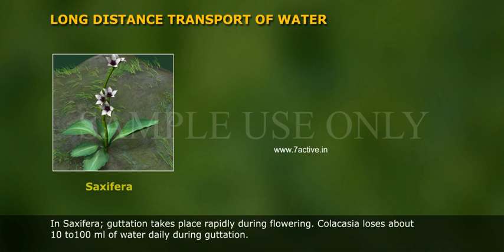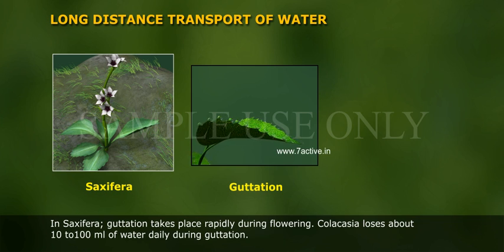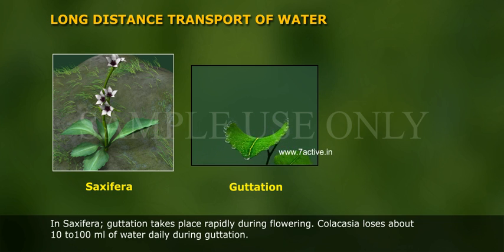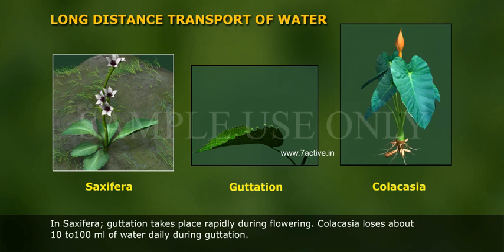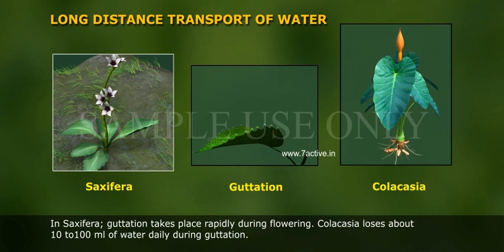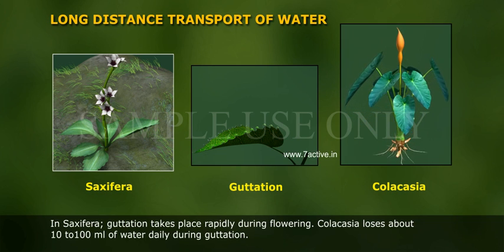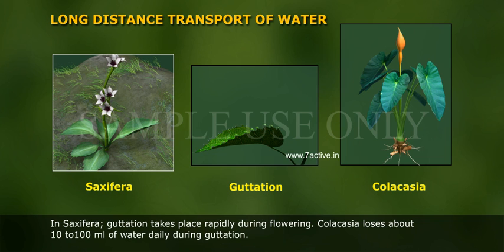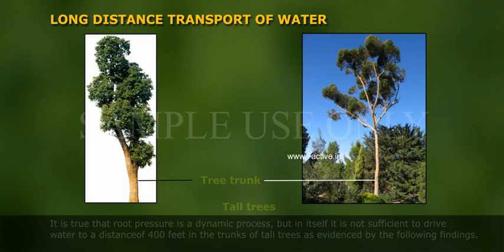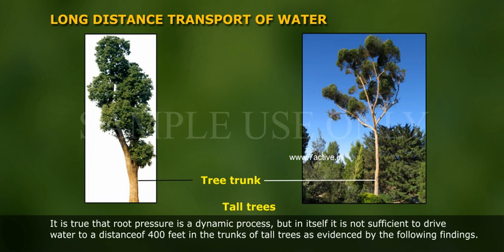In saxifraga, guttation takes place rapidly during flowering. Colocasia loses about 10 to 100 ml of water daily during guttation. It is true that root pressure is a dynamic process.